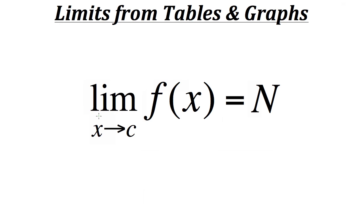This is a tutorial on limits and how to find them using tables and graphs. The notation involves the letters LIM, referring to a limit. The idea is to look at a function f and observe its various outputs as it approaches a specific value along the x-axis, which is C. As we get closer to that C value, the output gets closer to a number n, our limit. We read this as: the limit of f of x as x approaches C is equal to n.